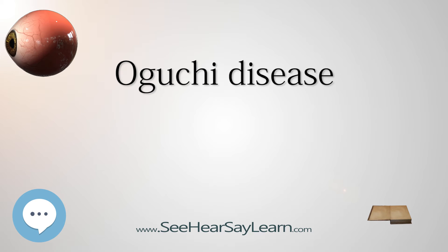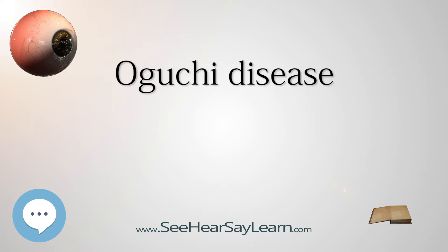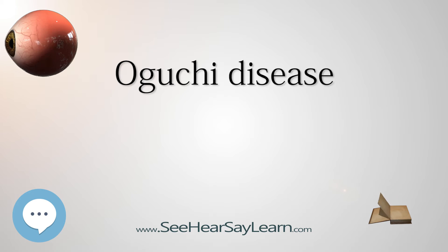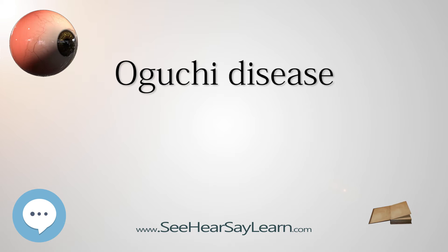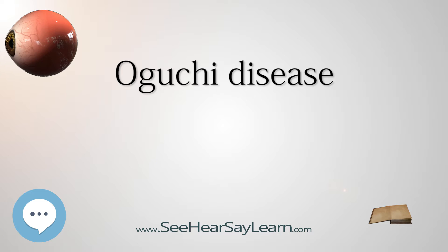Oguchi disease, also called congenital stationary night blindness, Oguchi type 1 or Oguchi disease 1, is an autosomal recessive form of congenital stationary night blindness associated with fundus discoloration and abnormally slow dark adaptation.